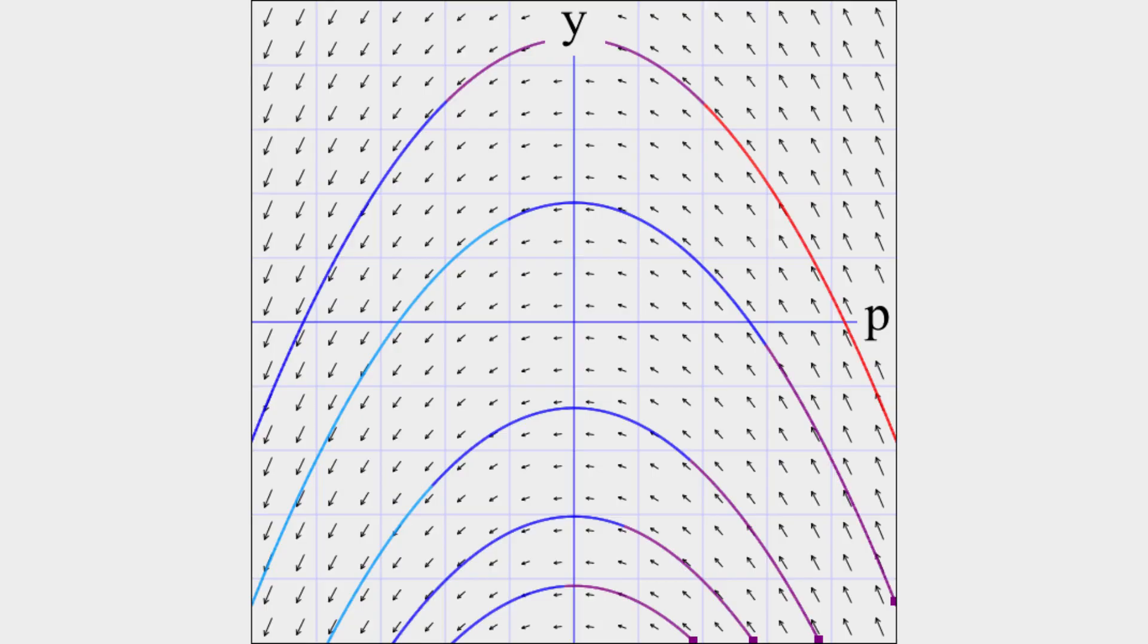Remember, the vertical height of the line is the position of the object, and the horizontal position of the line is how fast it's moving. This trajectory shows us that an object moves slower the higher it gets under the influence of gravity.